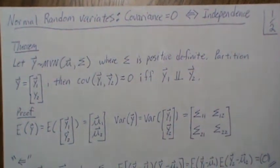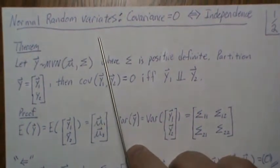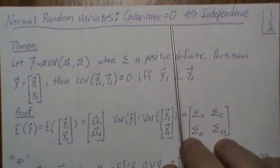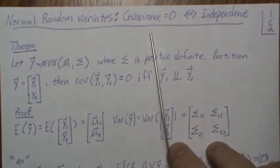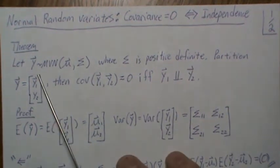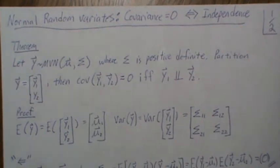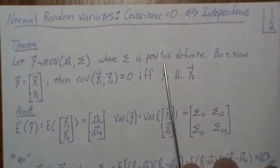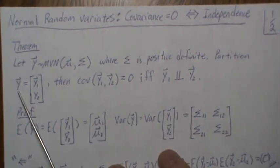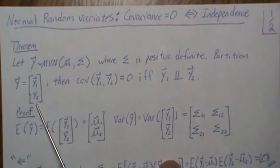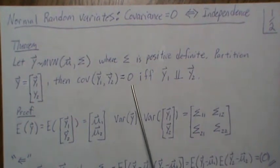In this video we're going to explore the idea that when we have two normal random variables and the covariance is zero, that implies they're independent, and if they're independent that implies the covariance is zero. The theorem is: if we have a multivariate normal random variable with mean vector and variance-covariance matrix sigma, where sigma is positive definite, and we partition the y vector into y1 and y2, then the covariance between y1 and y2 equals zero.